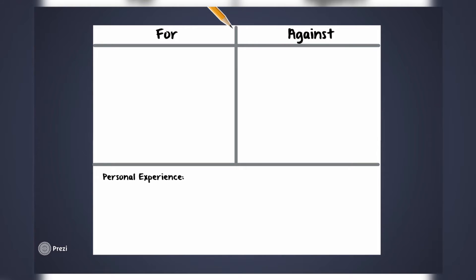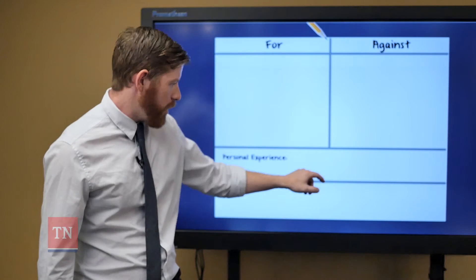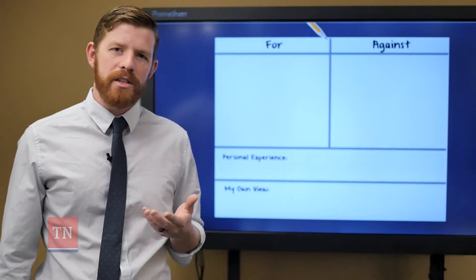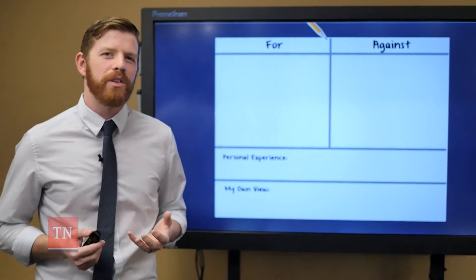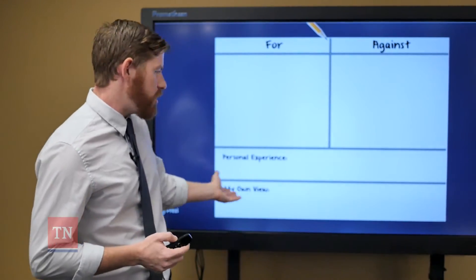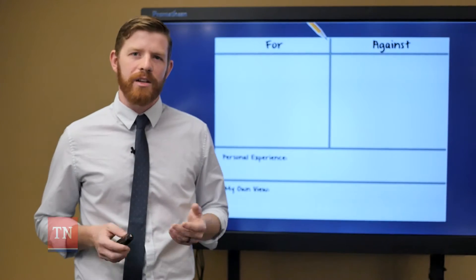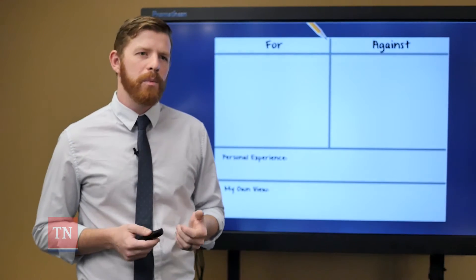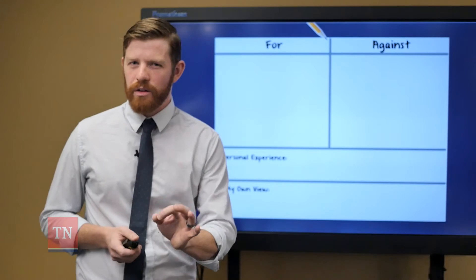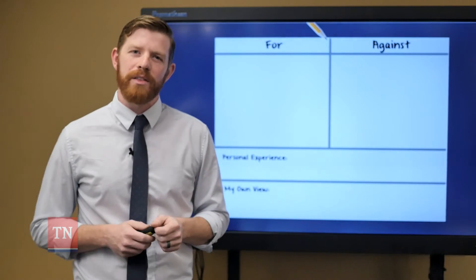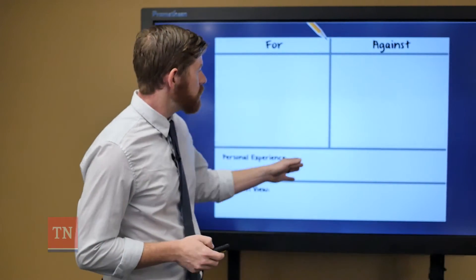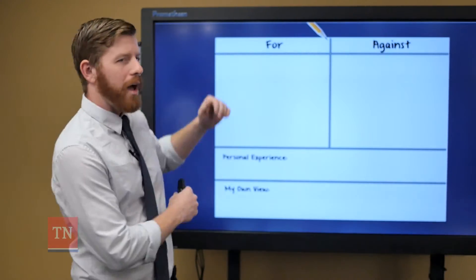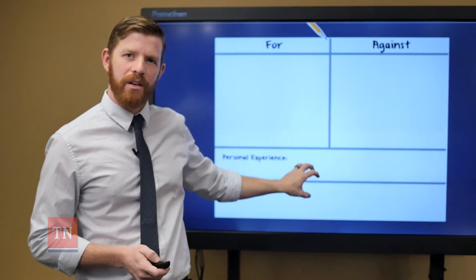Draw one more line, and here we're going to write whatever personal experience we might have with the subject. Draw one more line, and then we need to write our own view. This is where you're going to write what your view is on the subject — whether you agree with it or disagree — and this will make it absolutely clear what your beliefs are about the subject. So now that we have our road map, we need to fill in this information.